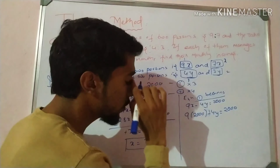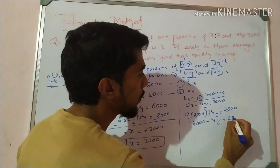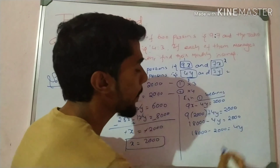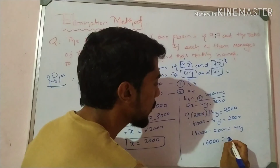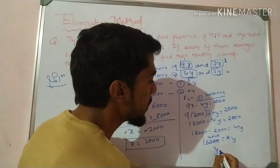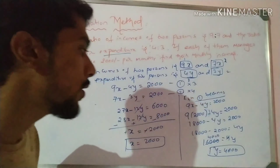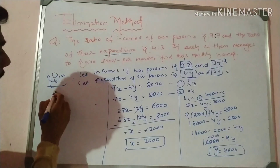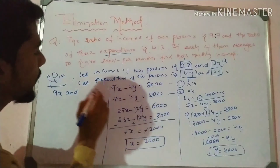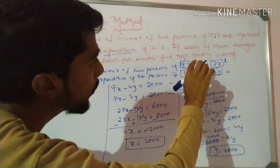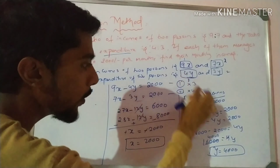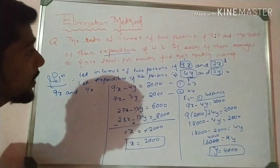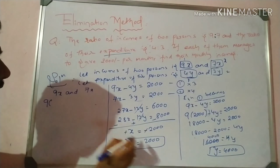When we multiply equation one by 3 we get: 27x minus 12y equals 6,000. When we multiply equation two by 4 we get: 28x minus 12y equals 8,000. Now subtracting — changing the sign — 27 minus 28 gives minus x, and minus 12y plus 12y cancels to zero. On the right side 6,000 minus 8,000 gives minus 2,000. So minus x equals minus 2,000, and the negatives cancel giving x equals 2,000.